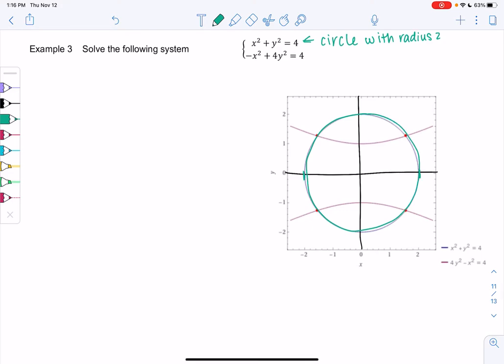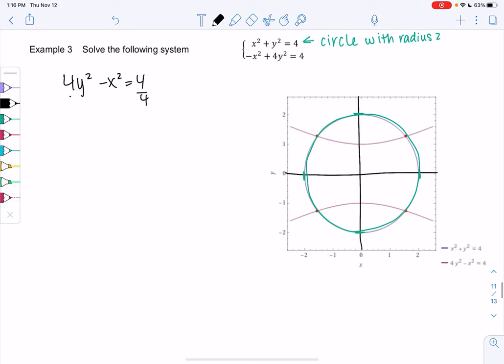So we go out to 2 in both directions. And then we have negative x squared plus 4y squared equals 4, which is a hyperbola. And we get 4y squared minus x squared equals 4. Usually hyperbolas, we put the positive one first. And we just divide by 4. So we get a hyperbola.